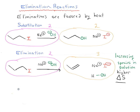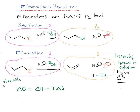This ties into thermodynamics further. For a given reaction, we can describe the thermodynamic properties through this equation: delta G equals delta H minus T delta S. Delta G is the Gibbs free energy, and delta H is the enthalpy — that term comes mostly from the strengths of the bonds that are formed and broken. For delta G to be favorable, it's going to be negative. The more negative delta G is, the more favorable the reaction is.